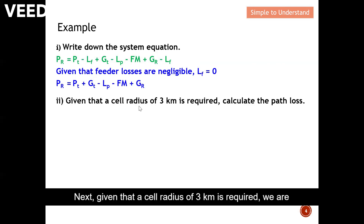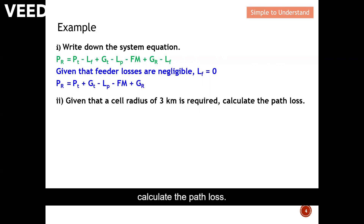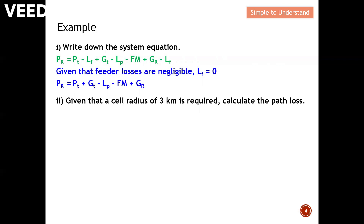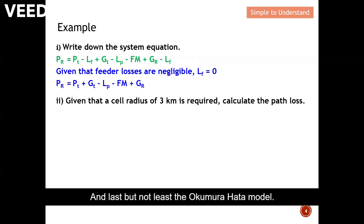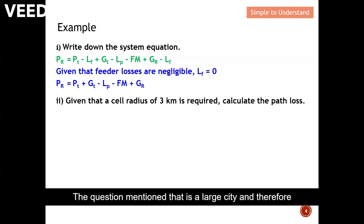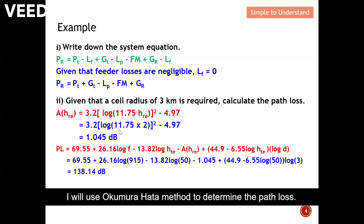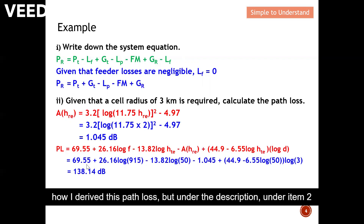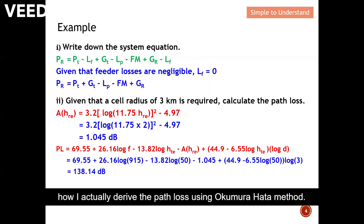Next, given that a cell radius of 3 km is required, we calculate the path loss. There are three ways to calculate path loss: free space path loss, the plane earth model, and the Okumura-Hata model. Since the question mentions a large city, I will use the Okumura-Hata method, which is suitable for urban environments. Under description item 2 you can find the step-by-step derivation.